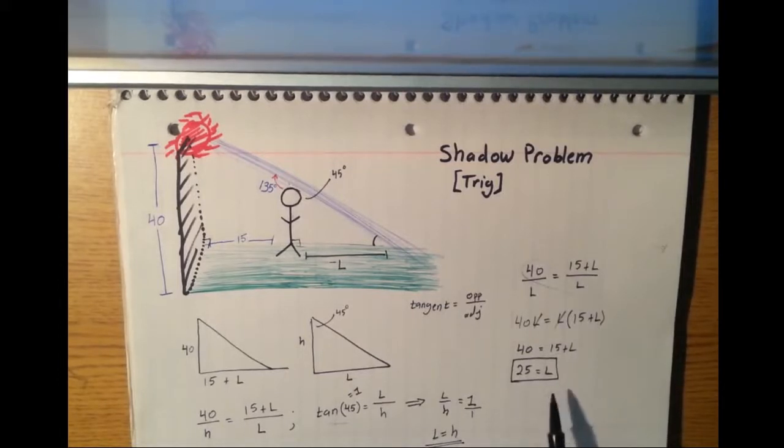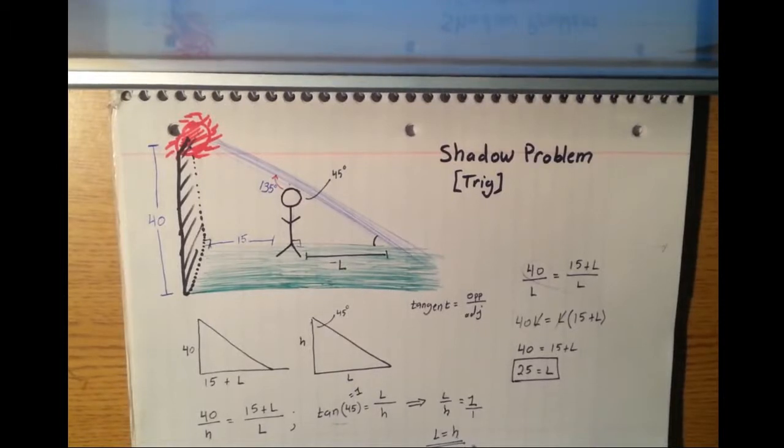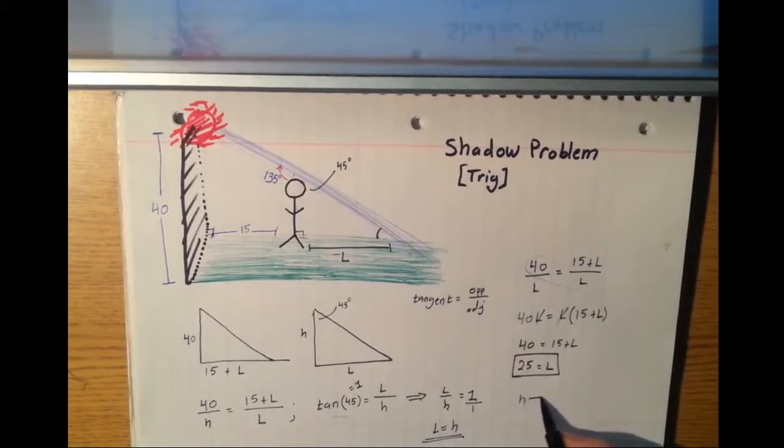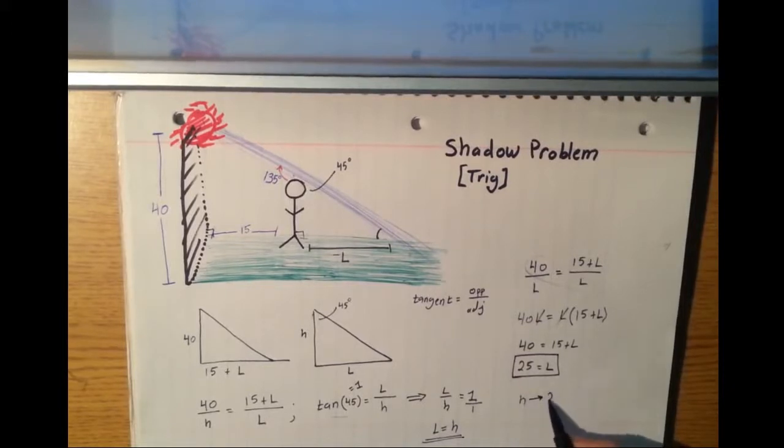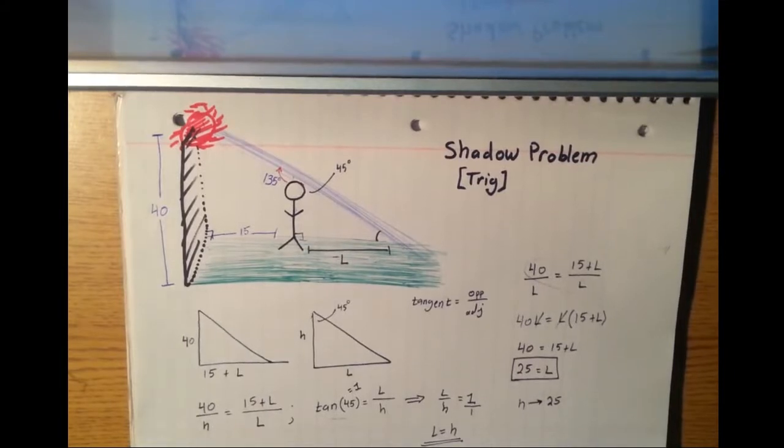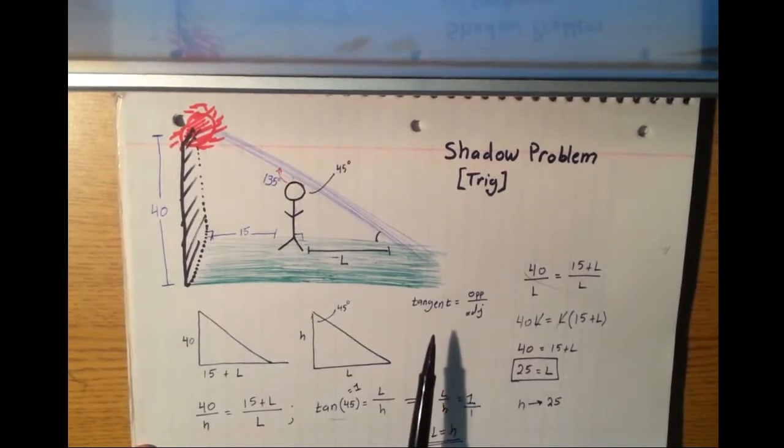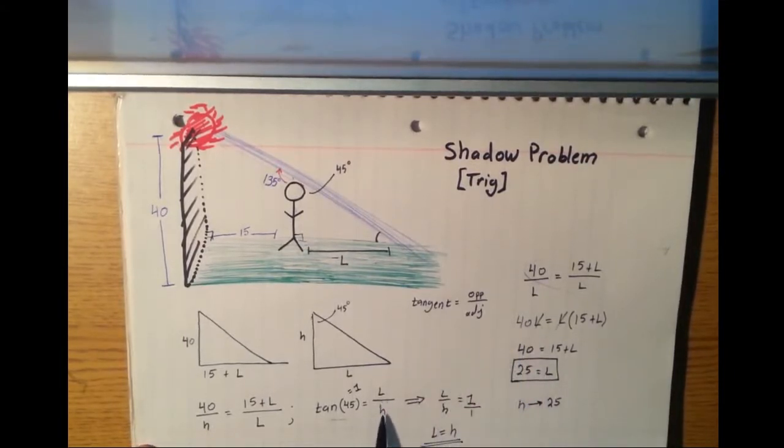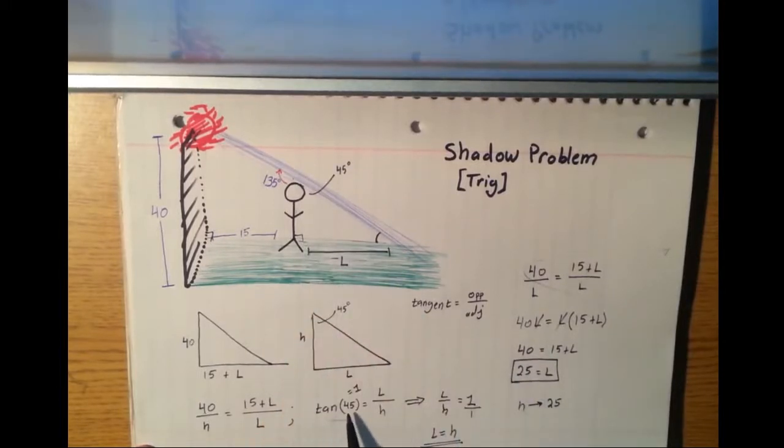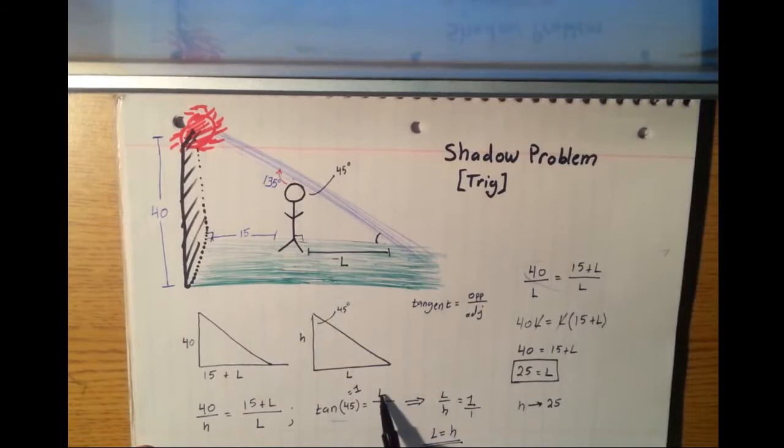Now, this solution makes a lot of sense. Because remember, L equals H. And since L equals H, we know that H must also be 25. Well, this is interesting because our relationship that we set up between L and H, the tangent of 45, tangent of 45 equals 1. So that means L divided by H has to equal 1. What's 25 divided by 25? That is, of course, 1.